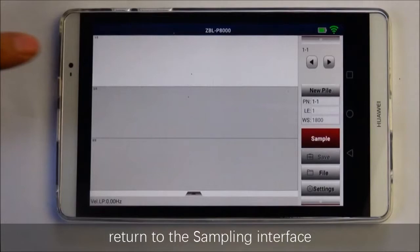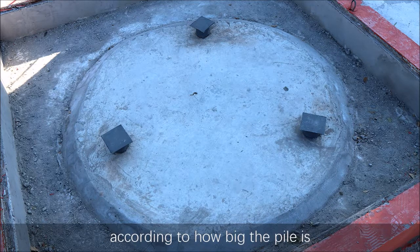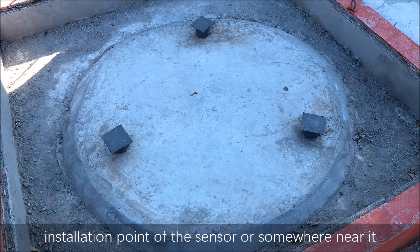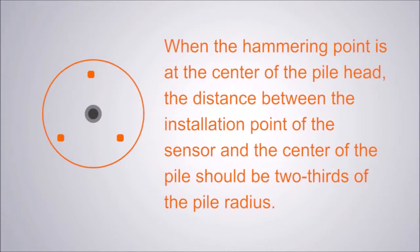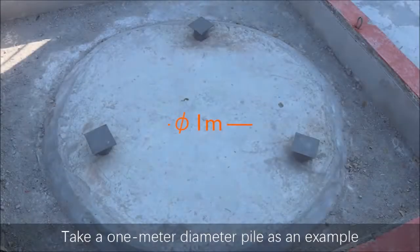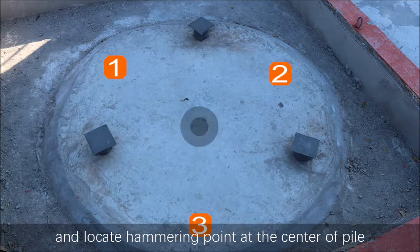After setting all parameters, return to the sampling interface. Pile test: You can choose 1 to 4 testing points according to how big the pile is. Defects or cracks are not allowed at the installation points of the sensor or somewhere near it. When the hammering point is at the center of the pile head, the distance between the installation point of the sensor and the center of the pile shall be two-thirds of the pile radius. When the hammering point is not at the center, the distance between the installation point of the sensor and the striking point shall be more than half of the radius. Take a 1-meter diameter pile as an example. We choose 3 testing points and locate a hammering point at the center of the pile.